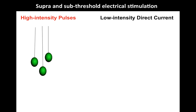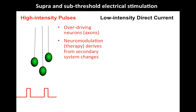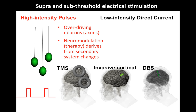With super-threshold stimulation — this is high-intensity stimulation — shocks are delivered to the brain, and those shocks cause cells to fire. If you deliver two shocks, the cells fire twice. If you stimulate at 100 Hz, the cells fire at 100 Hz. With super-threshold stimulation, you are always over-driving neurons, making things fire more. Whatever happens to the brain that might be beneficial as a result of that, if you're using this as a therapy, is secondary to making cells fire more.